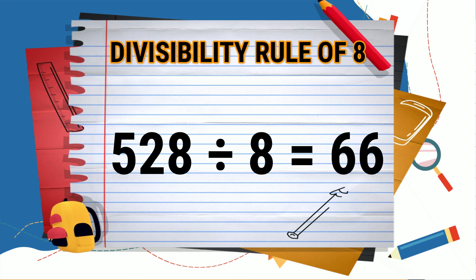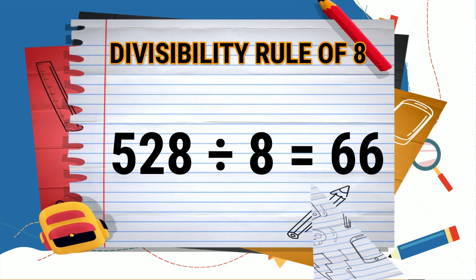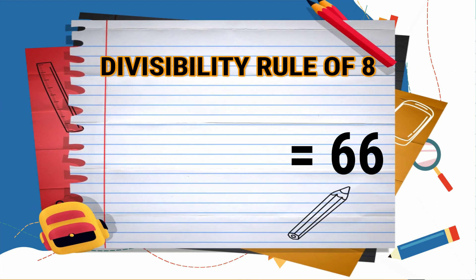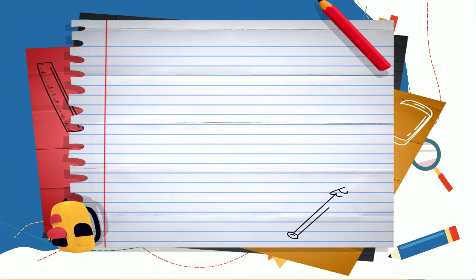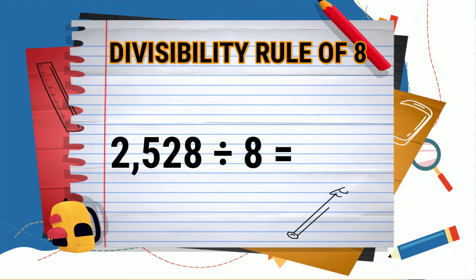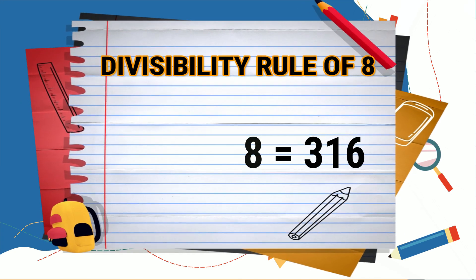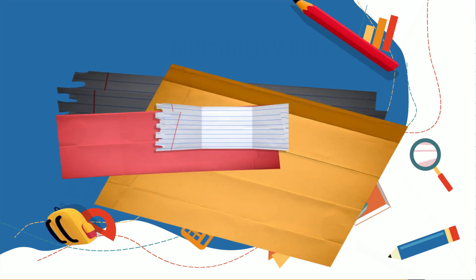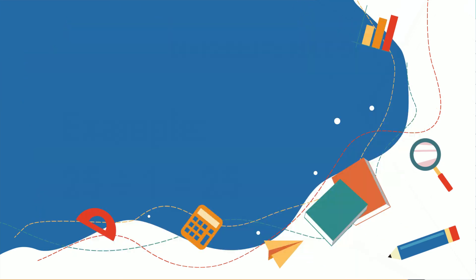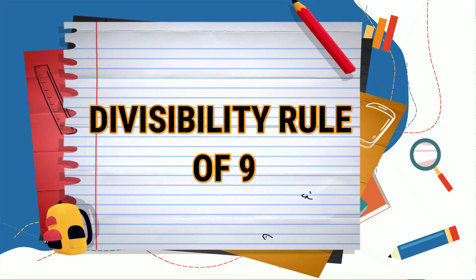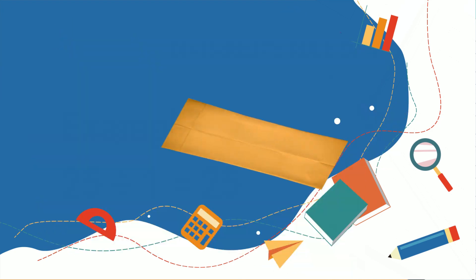528 divided by 8 is equal to 66. Now let's divide the example by 8: 2528 divided by 8 is equal to 316. The quotient has no remainder, therefore 2528 is divisible by 8. The ninth rule is the divisibility rule of 9: a number is divisible by 9 if the sum of its digits is divisible by 9.